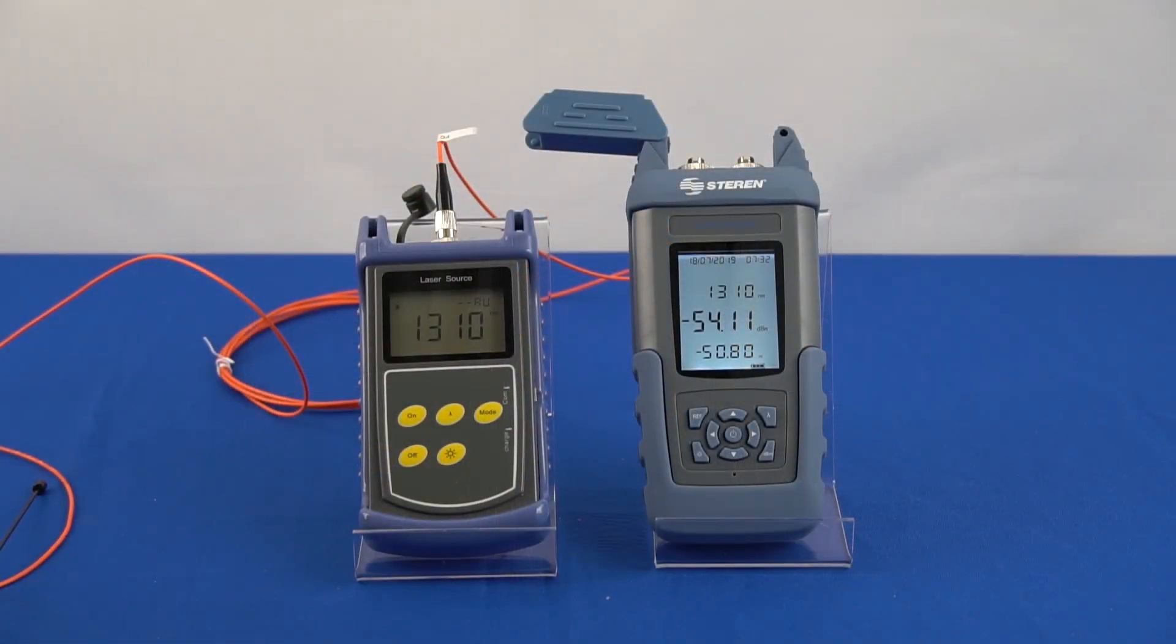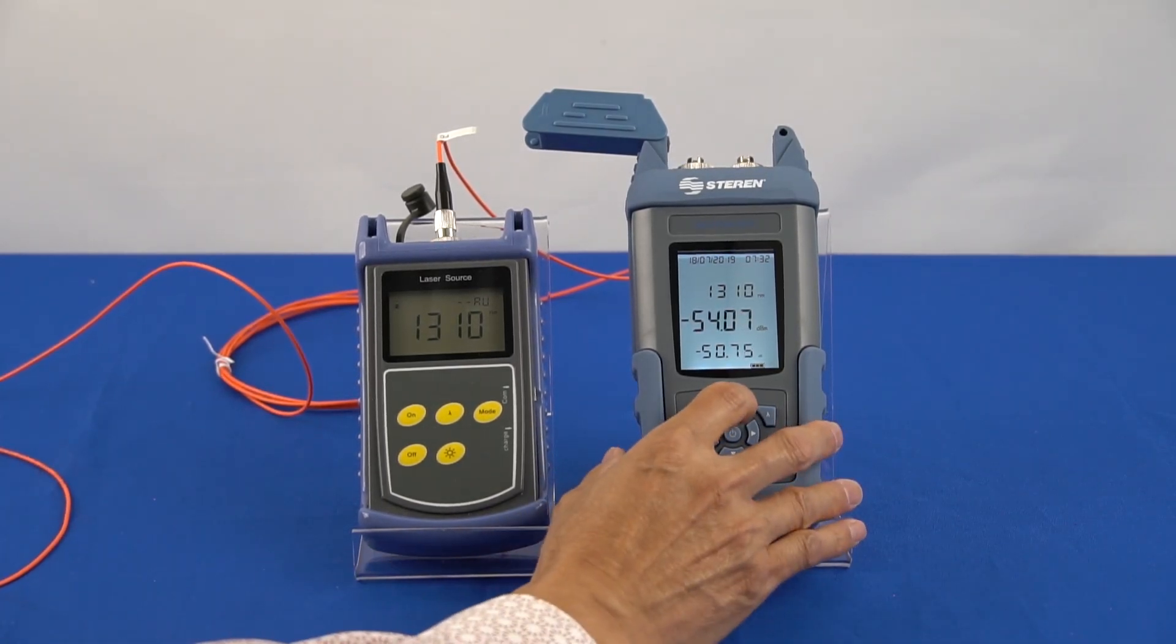This unit also features a visual fault locator function. This is used to check the 650 nm light source going through the cable.